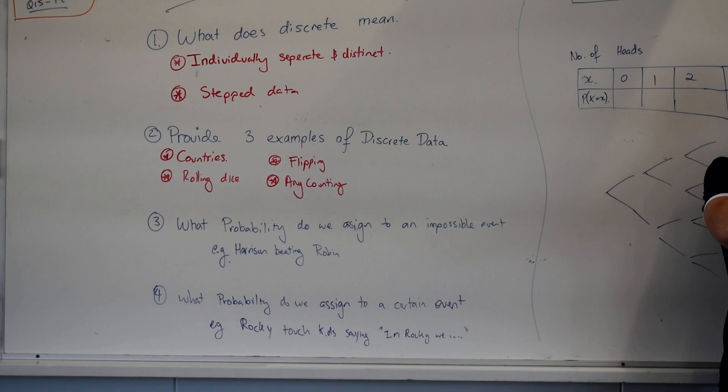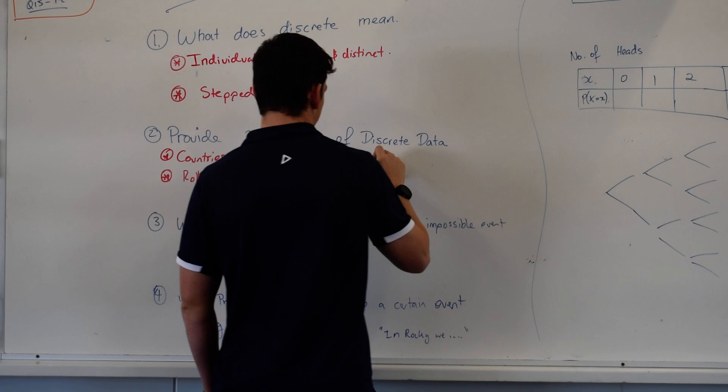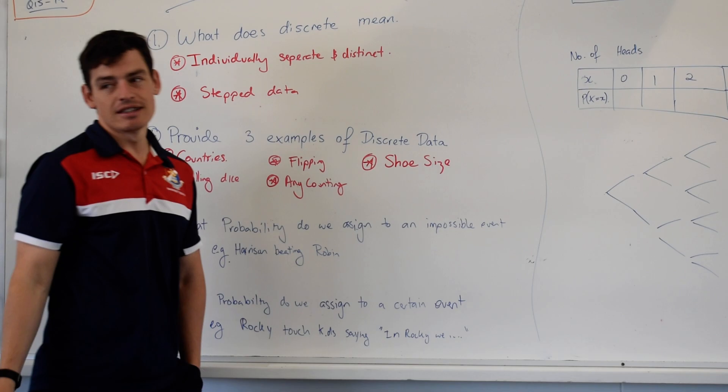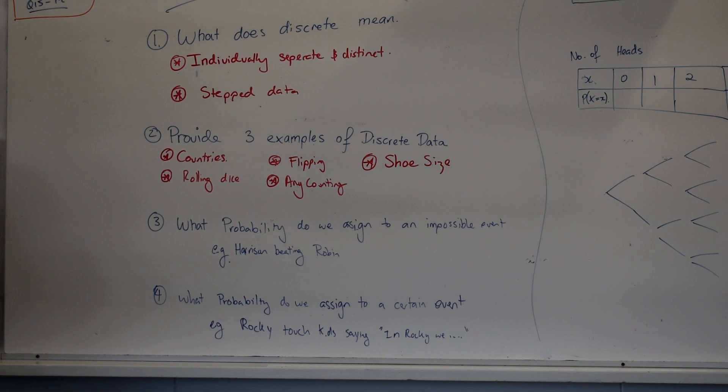Shoe size. Is that discrete or continuous? Continuous. Yeah, that is still low. Does it level? In step? Yeah. Shoe size is an example of discrete data.